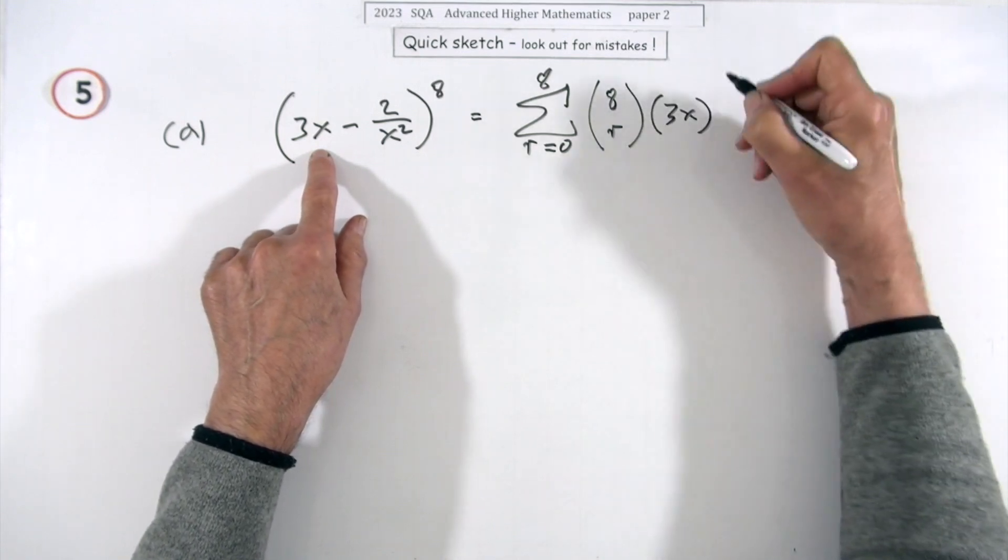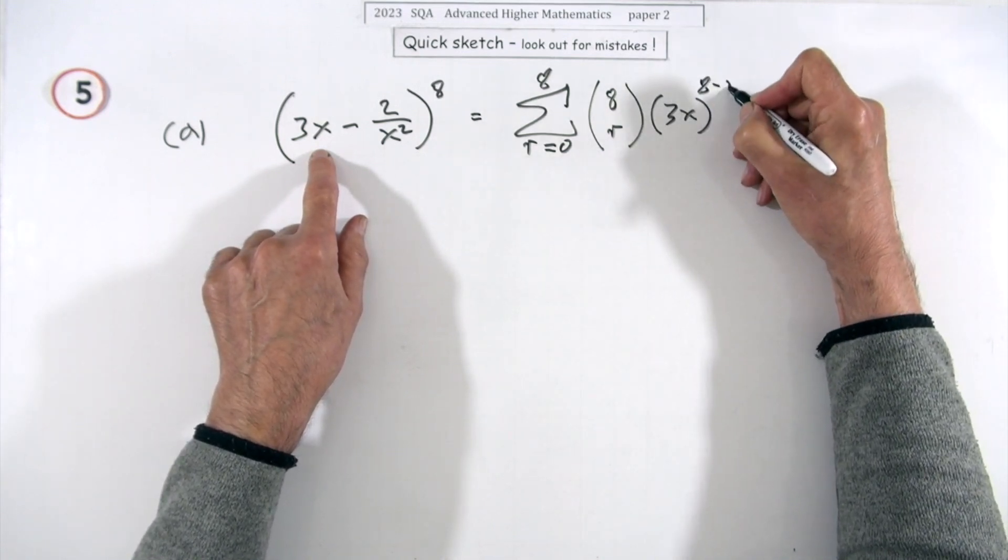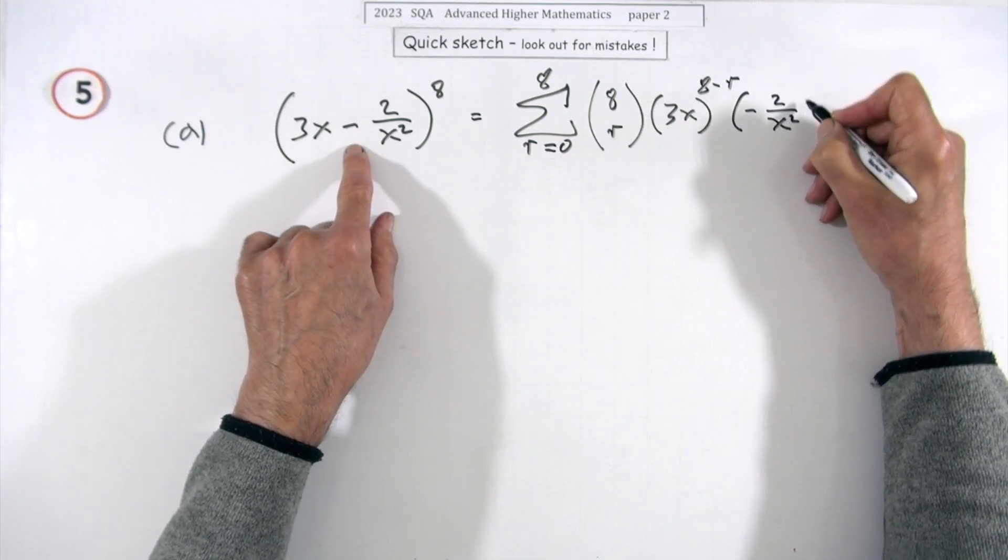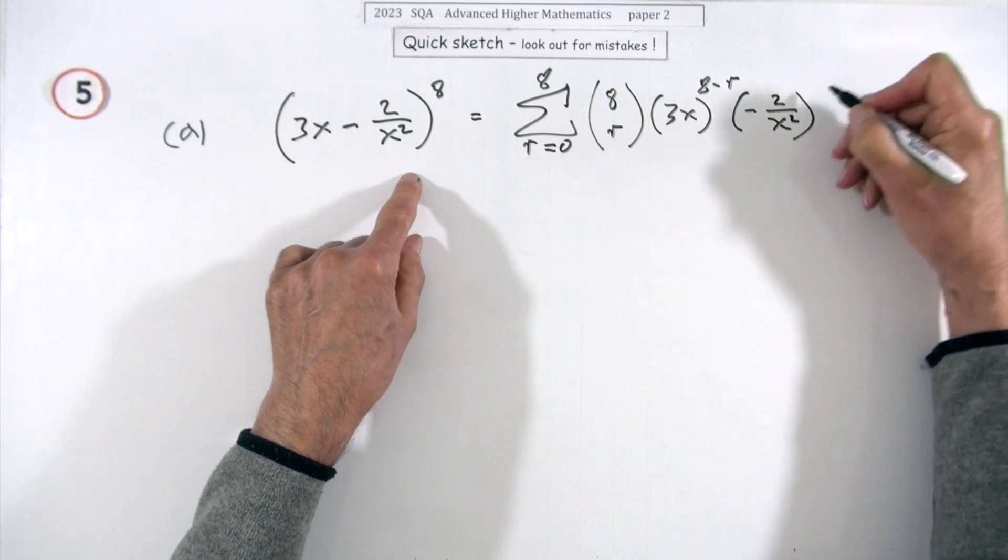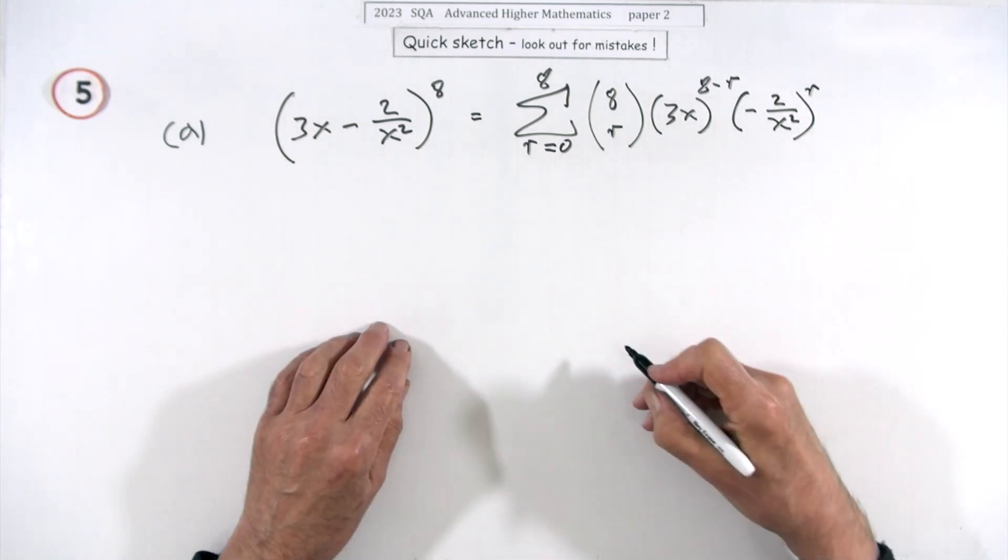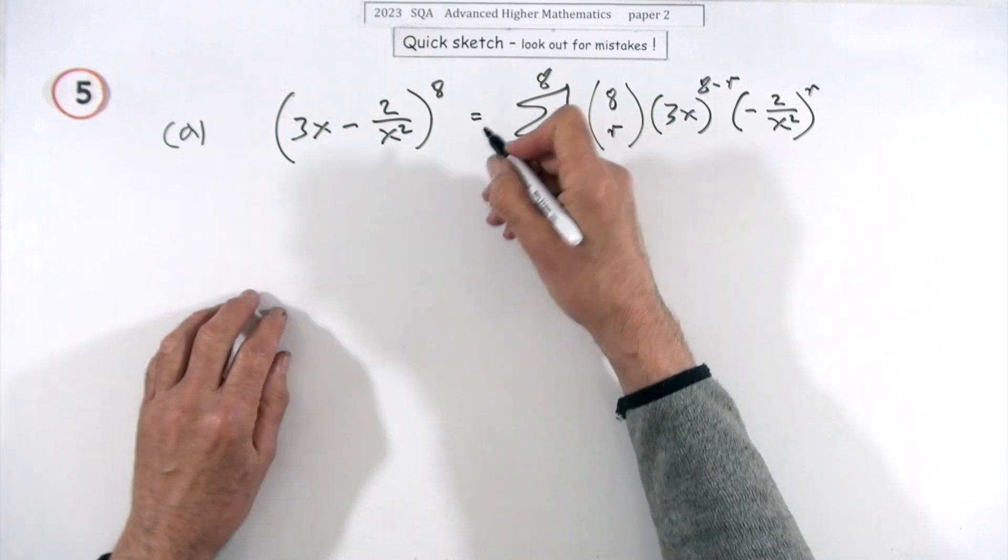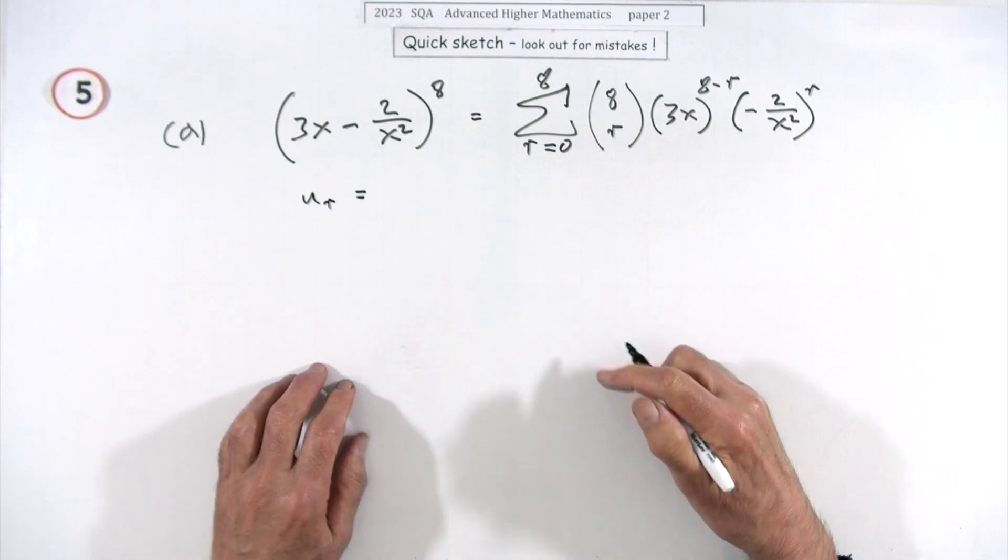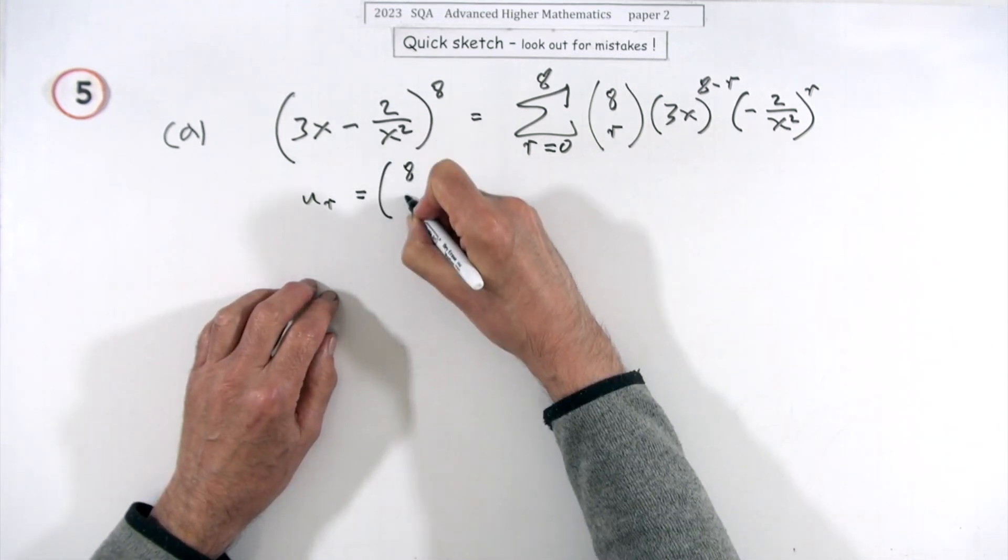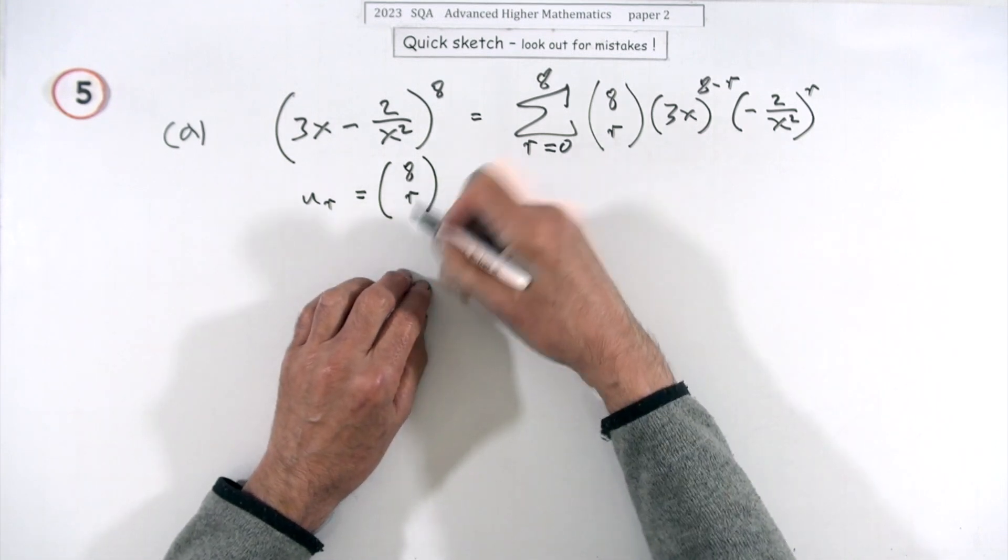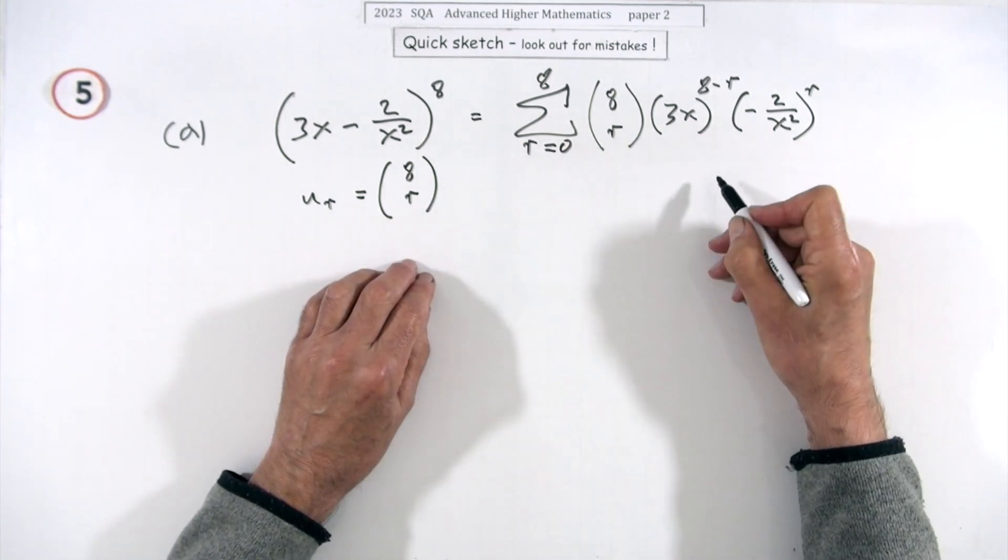You'd have the number of combinations, so that would be eight choose r of the first term three x. Usually it starts when it starts with the eight and works its way down, so eight minus r. And then the second one, don't forget the negative over x squared, and that's the one that will climb up with r. So if you want the general term, I suppose you'd have to write something like u_r. So we've got eight choose r and presumably you can just leave it in that combination form.